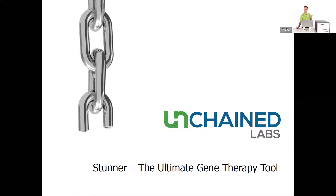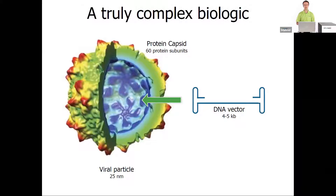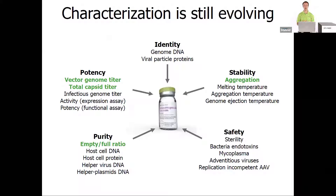This is all about what makes Stunner the ultimate gene therapy tool. It's really hard to know what's inside of your AAV capsids, but Stunner is willing to do whatever it takes to help you know your AAV inside out. AAV is a truly complex biologic — there are protein components, DNA components, size matters, morphology matters, and where all the components are relative to each other matters.